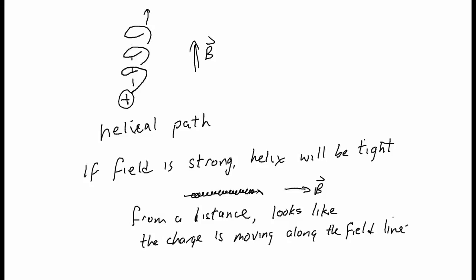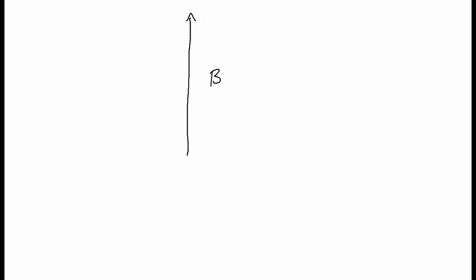This seems contrary to how we initially described the magnetic field — it sounds more like what the electric field does. The electric field causes a charge to move in the direction of the field. We said that the magnetic field exerts a force in every other direction except the direction of the magnetic field. But in this case, what the magnetic field is doing is basically canceling out any motion which is not along the B field.